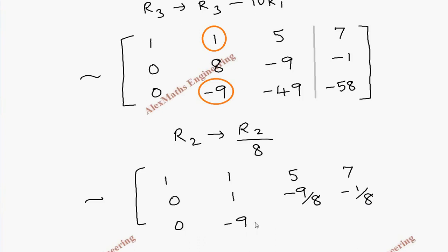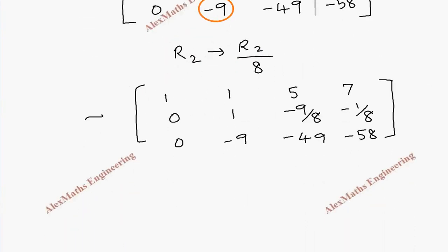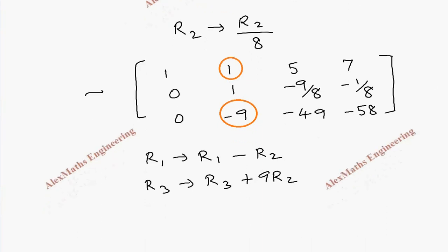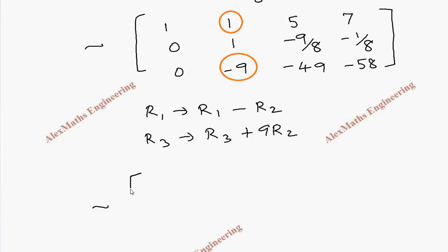Row 3 elements are written as they are. Now, making use of this 1, we are going to make two elements zero. We take R1 = R1 minus R2, and R3 = R3 plus 9 times R2. We multiply by 9 and add so we get 0. Writing the augmented matrix: for R1 minus R2, the first element is 1 minus 0 = 1; then 1 minus 1 = 0; and 5 minus minus 9/8...